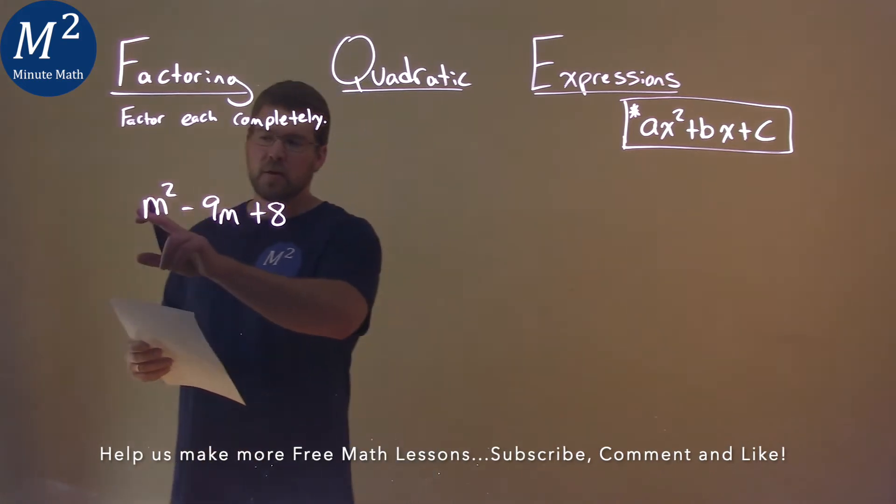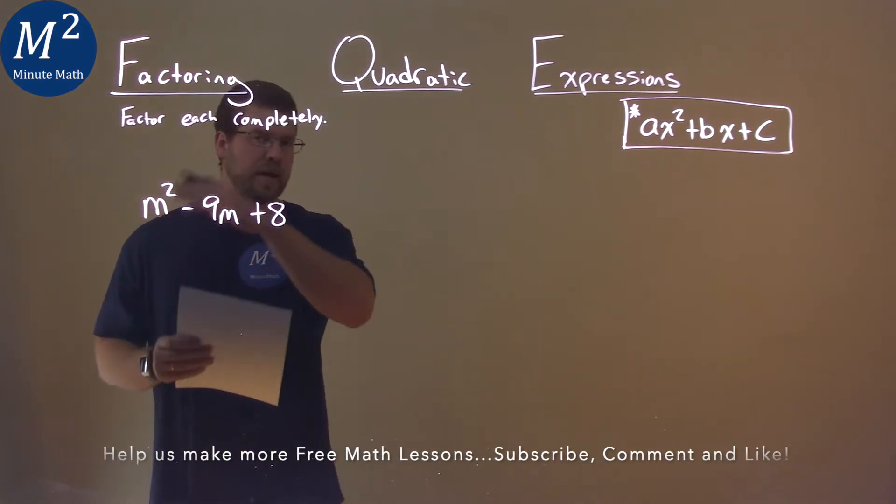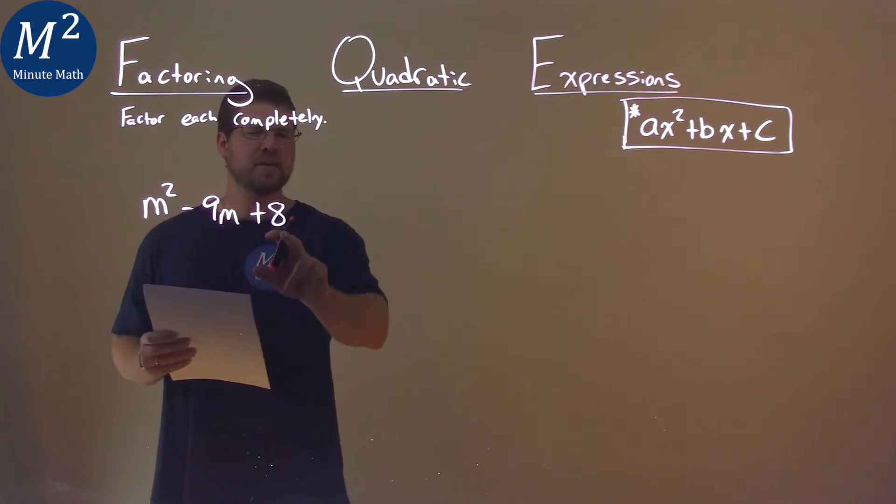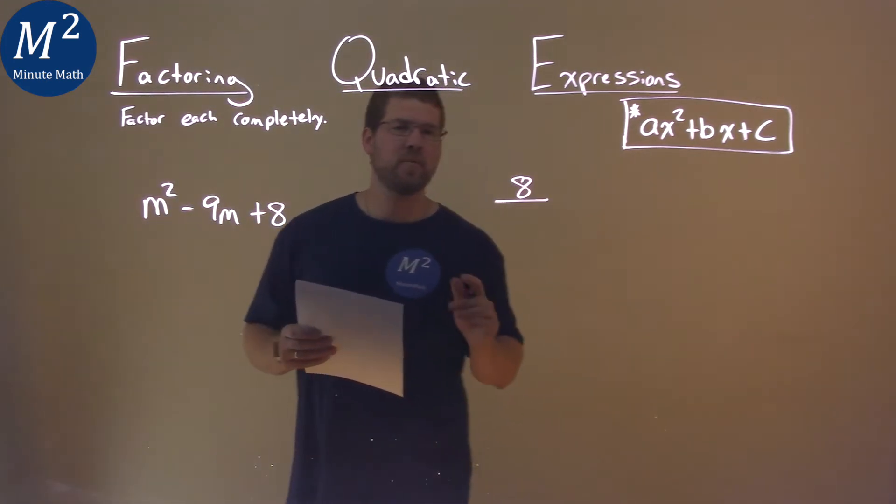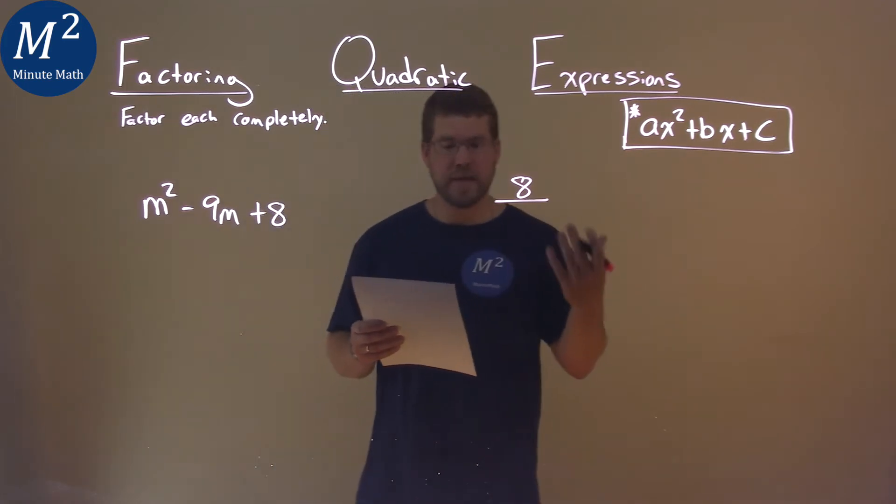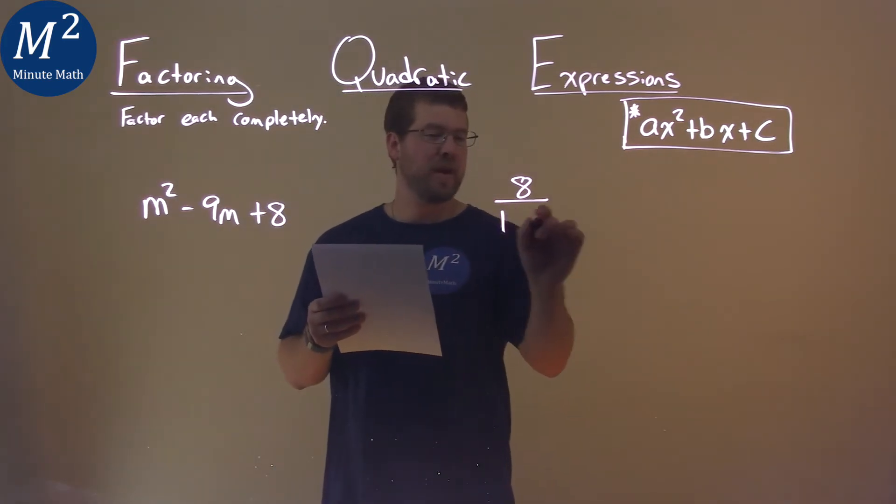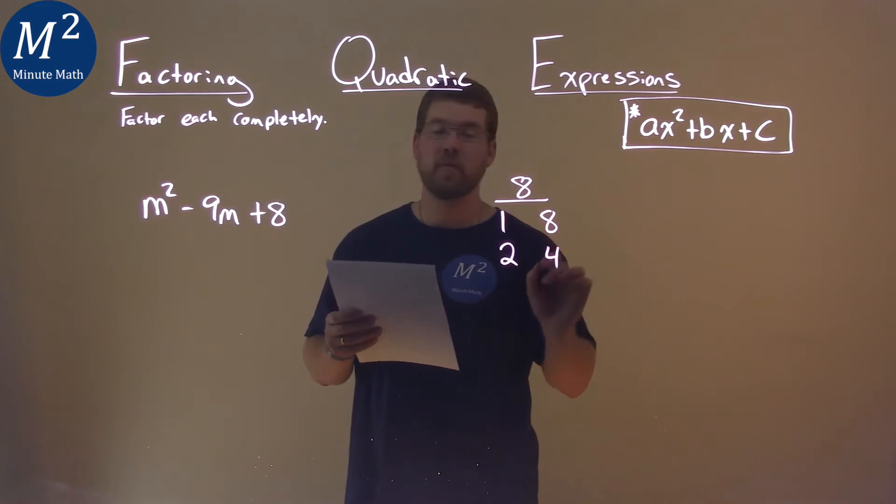My a value here is just 1, so it's good to know, it makes it simpler, and then our c value here is 8. So I'm going to take that 8 value and find what two numbers multiply to be 8. And that's just 1 and 8, and 2 and 4.